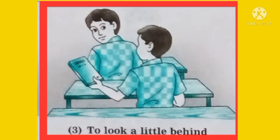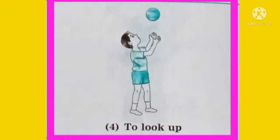In the fourth picture, the boy is playing with the ball and throws it up. When he throws it up, he looks up — that is the position of the neck in the fourth picture.